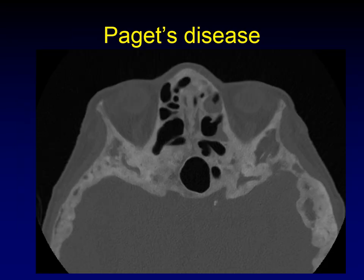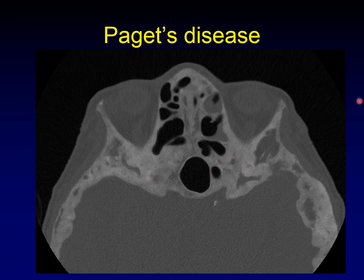If there's a pagetoid form of fibrous dysplasia, of course Paget's disease is a mimic. Look at the expansion of bone all through the central skull base — this one happens to be Paget's disease, but it looks a lot like the pagetoid form of fibrous dysplasia.